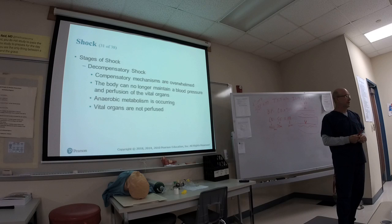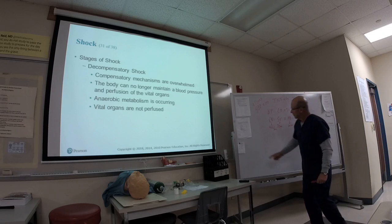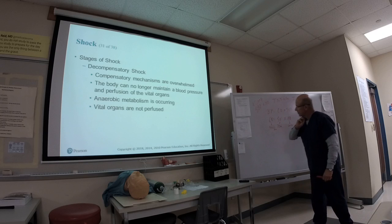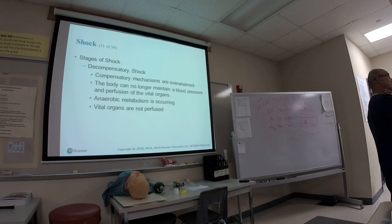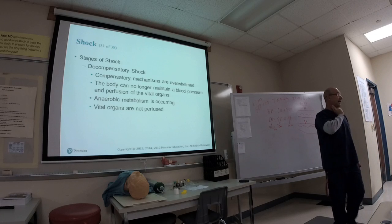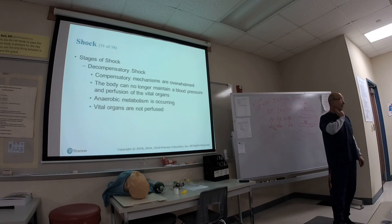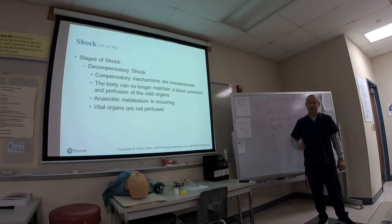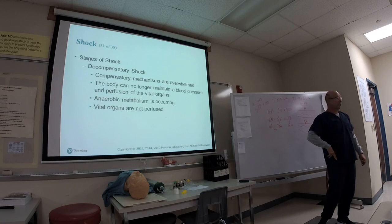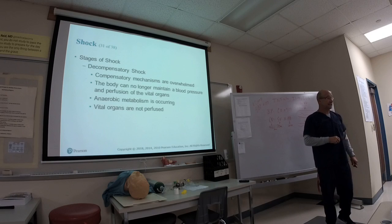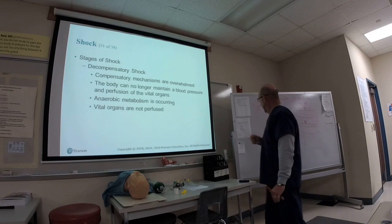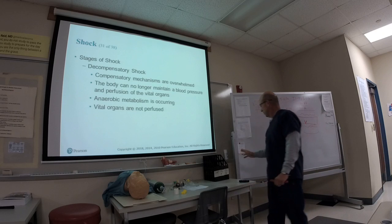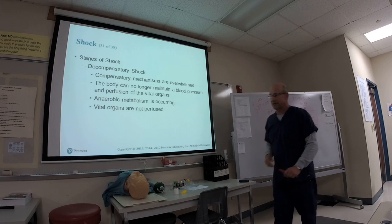If the kidneys aren't being perfused, that's a big deal. If there's no radial pulse but a carotid pulse is present, the estimated systolic pressure is about 60. If only a femoral pulse is present, the estimated pressure is about 70. Summary: radial pulse present estimates ~80 mmHg systolic; carotid pulse only estimates ~60 mmHg; femoral pulse only estimates ~70 mmHg.